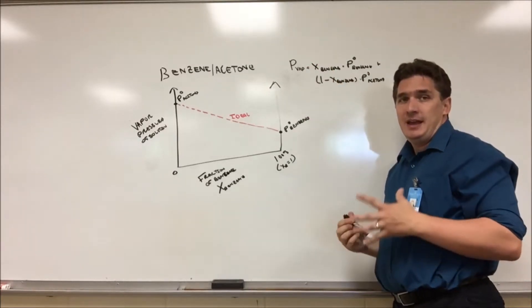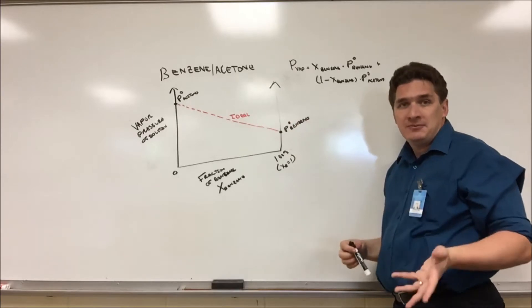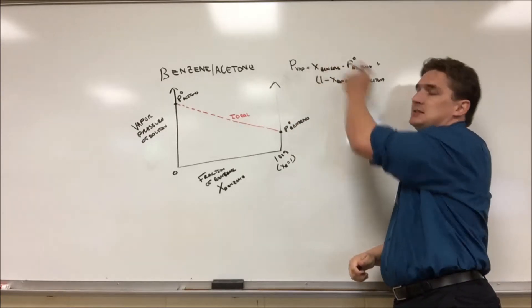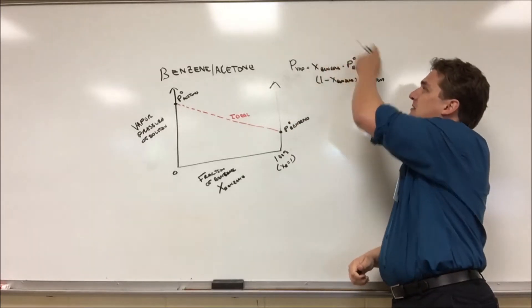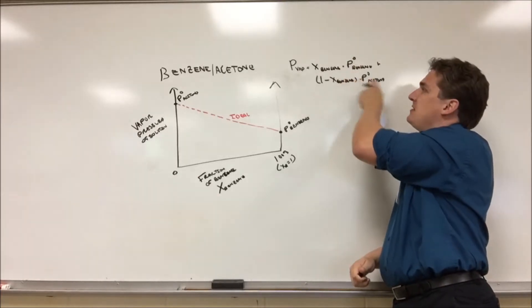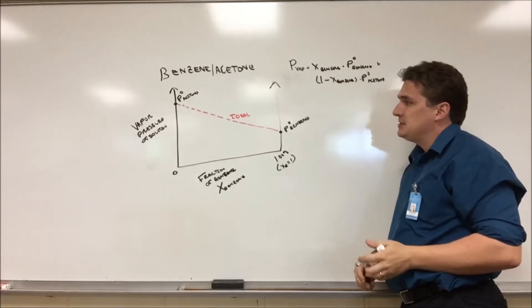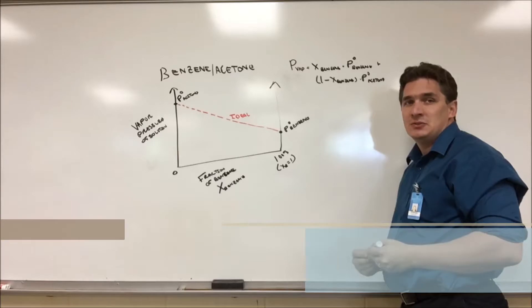Any combination between the two, let's say we have 50%. Well if X is 0.5, it's gonna be half the vapor pressure of benzene plus half the vapor pressure of acetone. Now this is what's referred to as an ideal solution. And ideal solutions basically follow this linear combination approach. Are there other types of solutions? Yes, but they are outside the scope of this class.